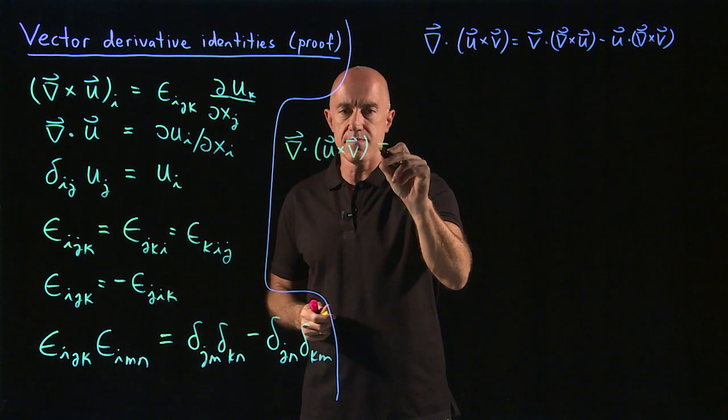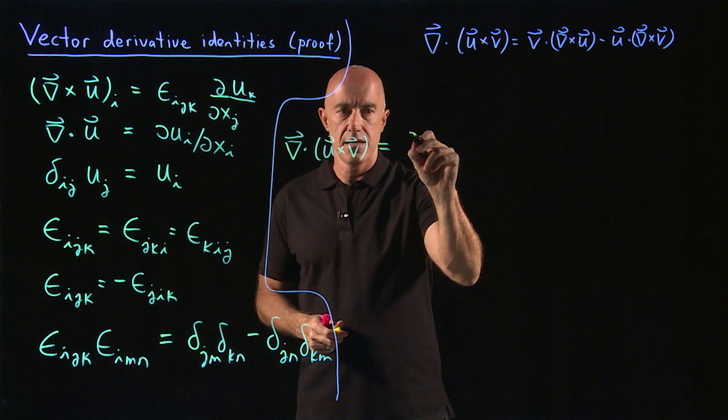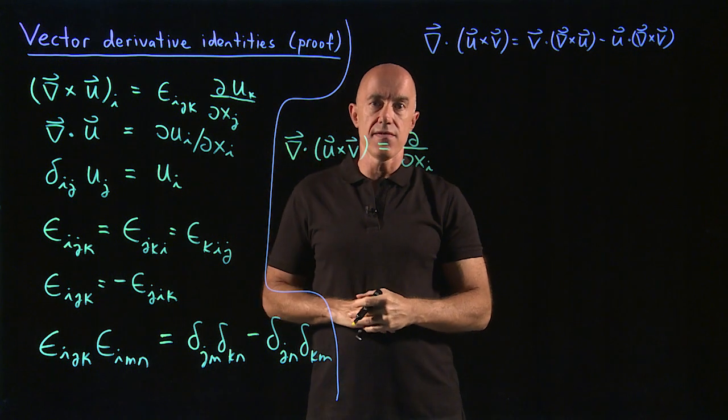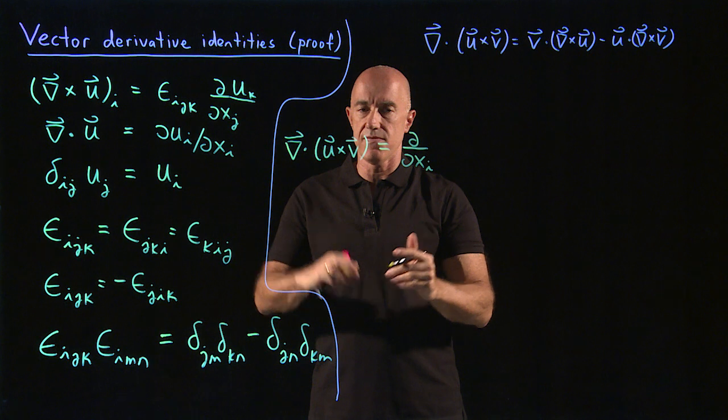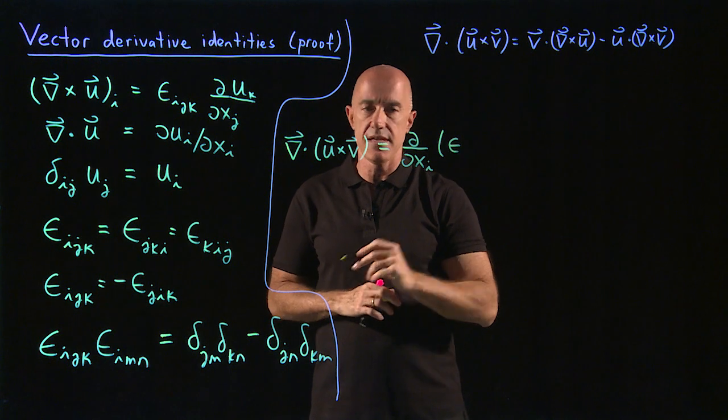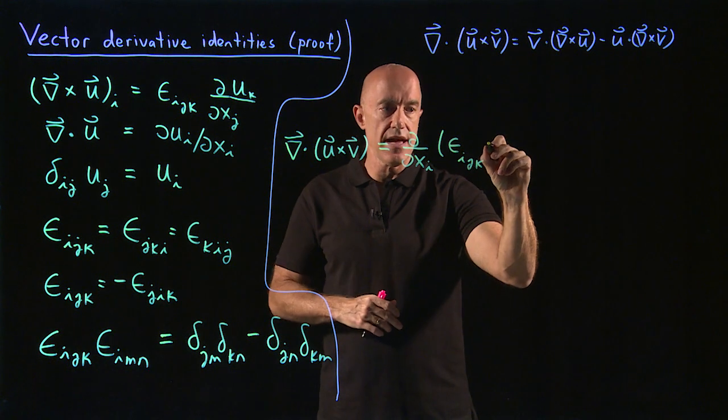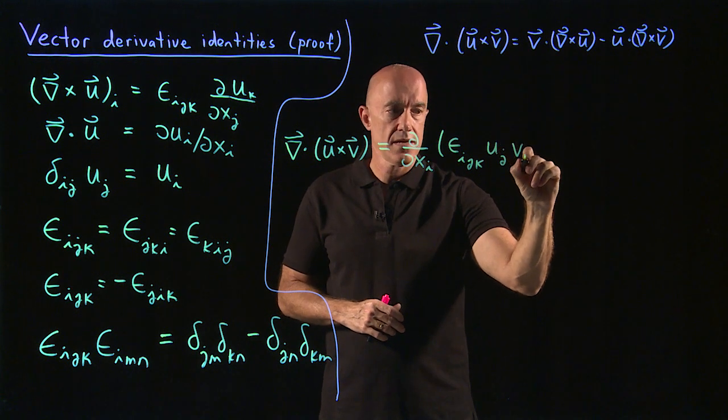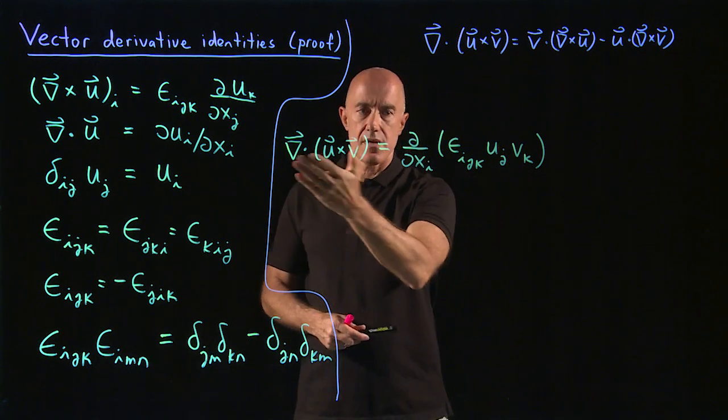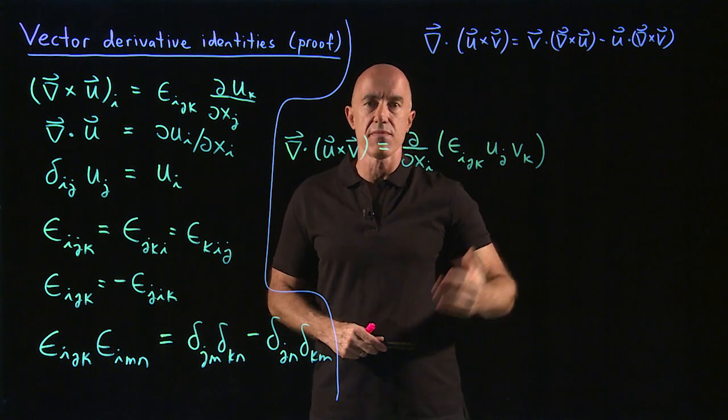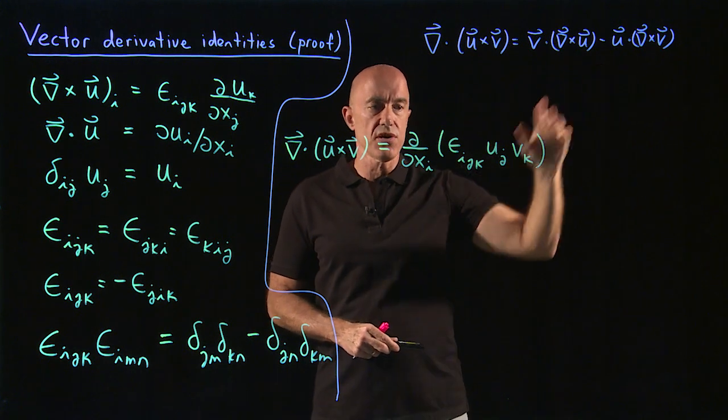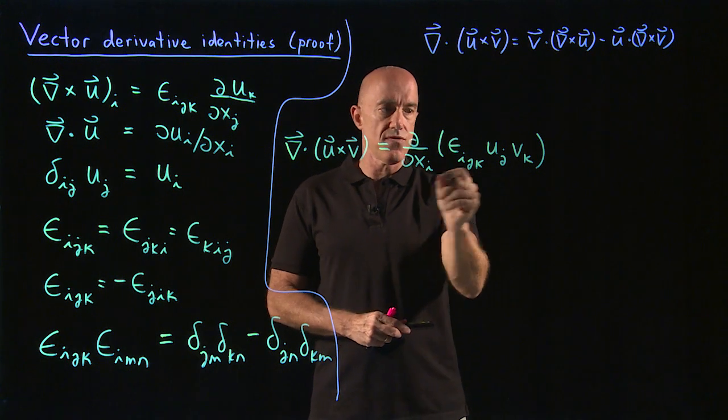So I need to write this dot product. So this is the derivative d/dx_i times the i-th component of u cross v. So the i-th component of u cross v is the Levi-Civita tensor epsilon_ijk, and then u_j v_k. We're summing over i, we're summing over j, and we're summing over k. So this is a scalar. To get to this result, then, we need to use the product rule for the derivative.